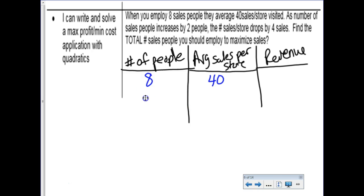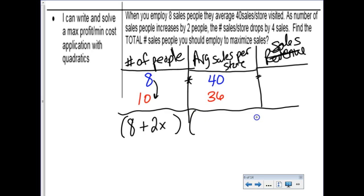But if you increase it by two, so now you're looking at 10 people, you're going to drop this down to 36 because it says it drops by four. So here, let's come up with some algebra that describes what's going on in this column. You started with eight people, and then you're going to be jumping by increments of two people. So every two people that you increase would be plus 2x. Now for this column, let's write up some algebra. You started with 40 sales per store, but you're going to drop in increments of four. So that's what I'm going to type in my calculator. This times this into y1.